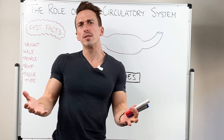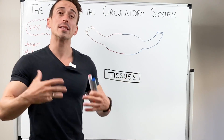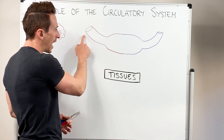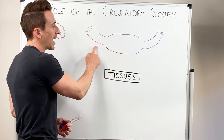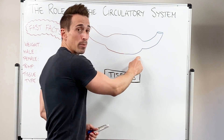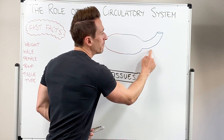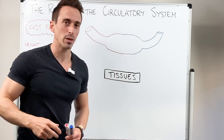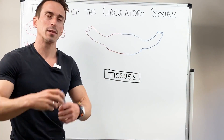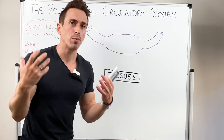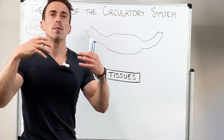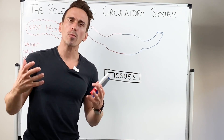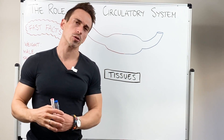So what is the circulatory system? Well firstly it's a collection of blood vessels, and we know that blood vessels comprise of arteries, arterioles, capillary beds, venules and veins. But it's also the components within these blood vessels — so this is blood, this is plasma, these are proteins and all the other components inside.